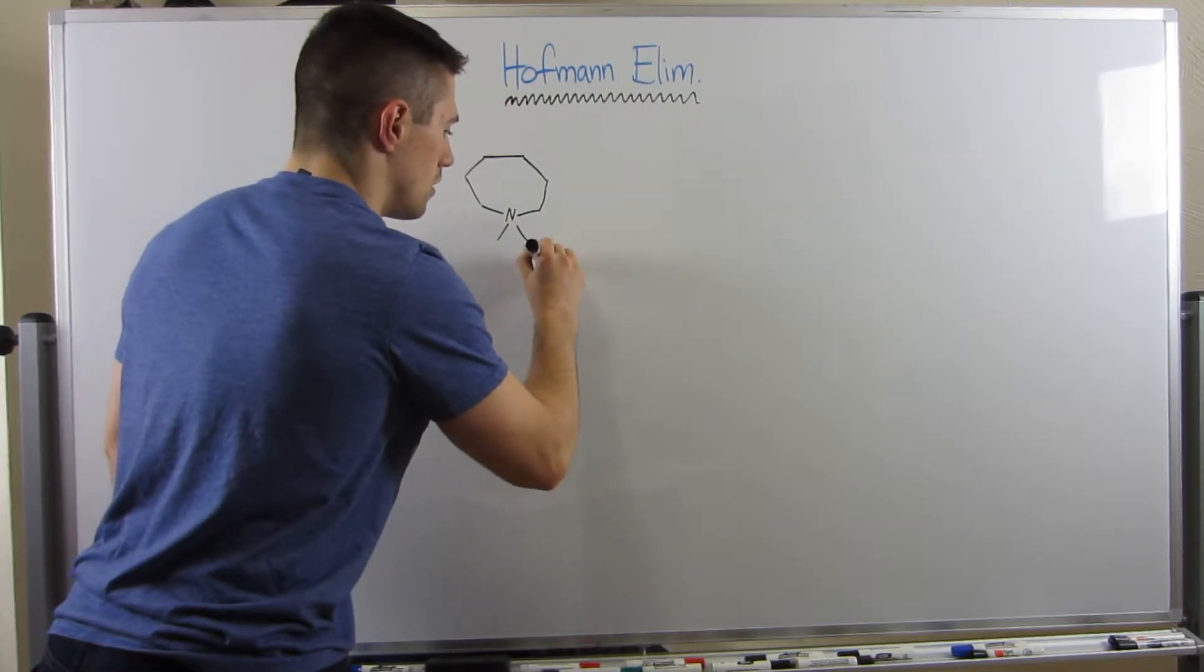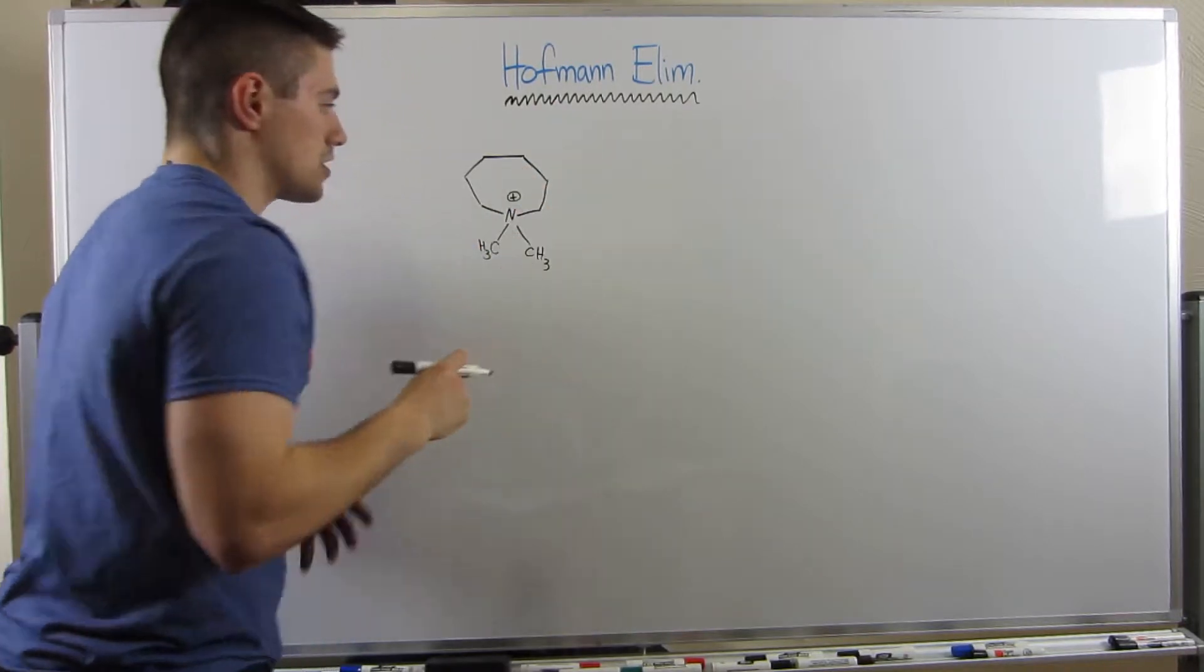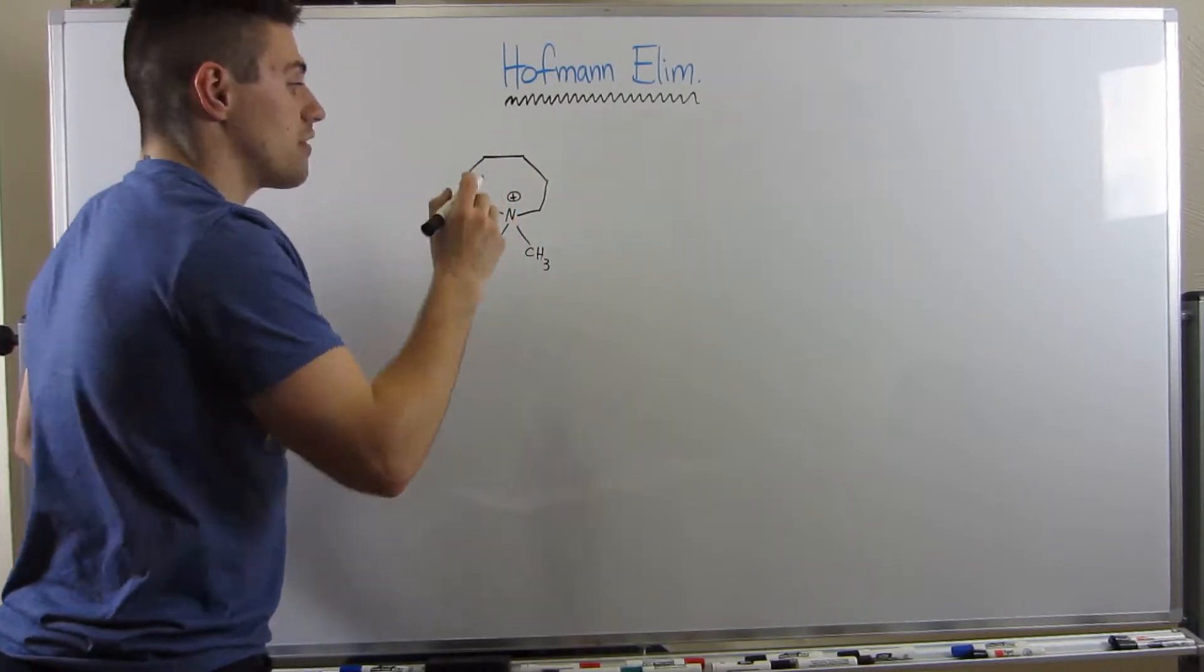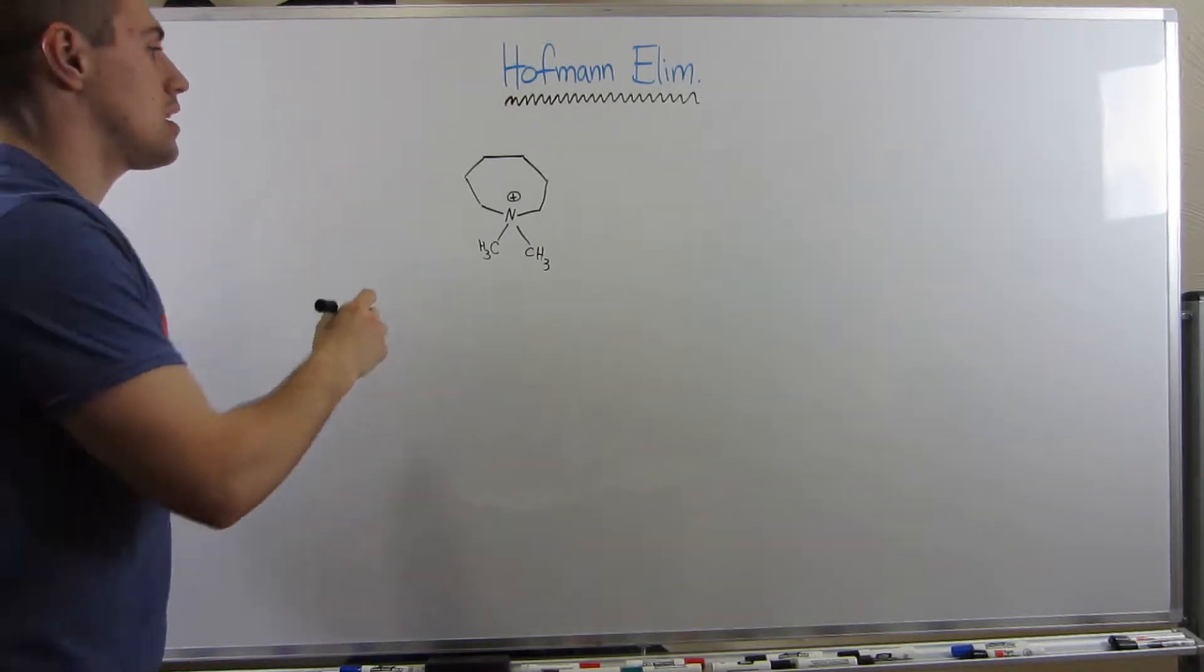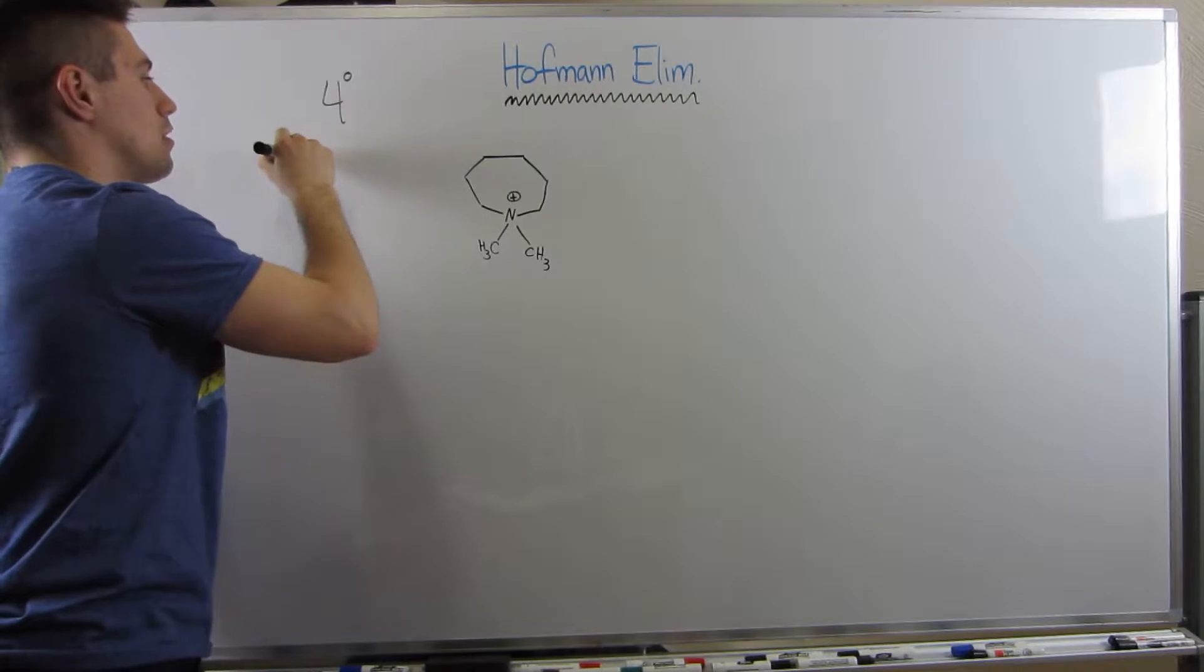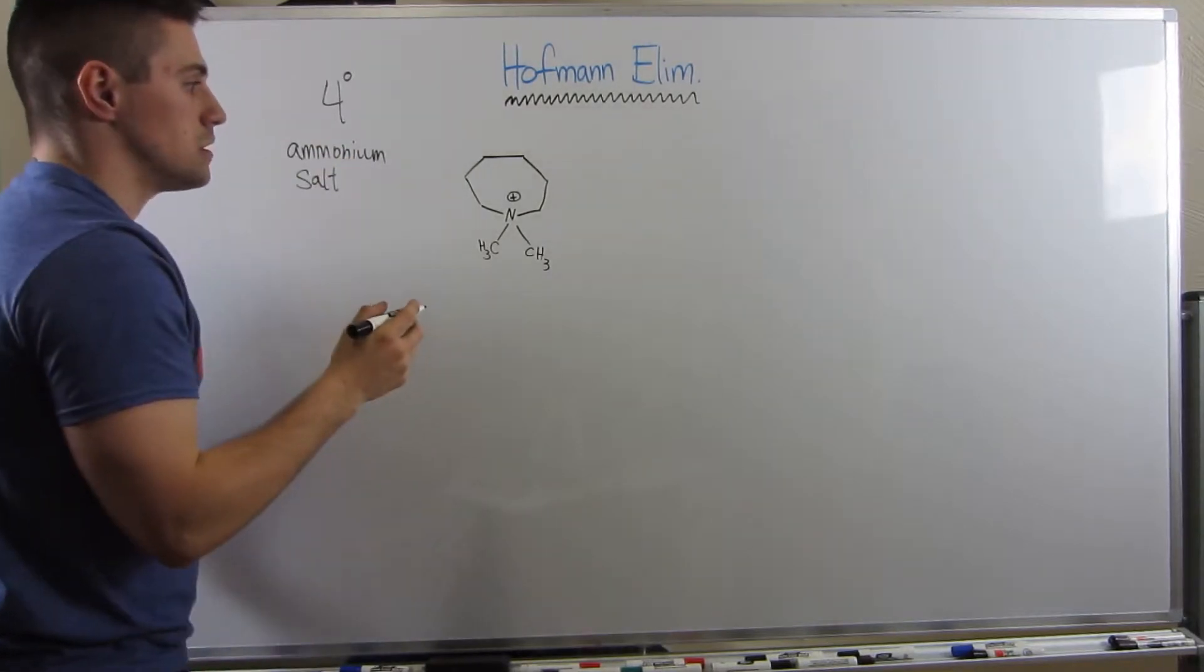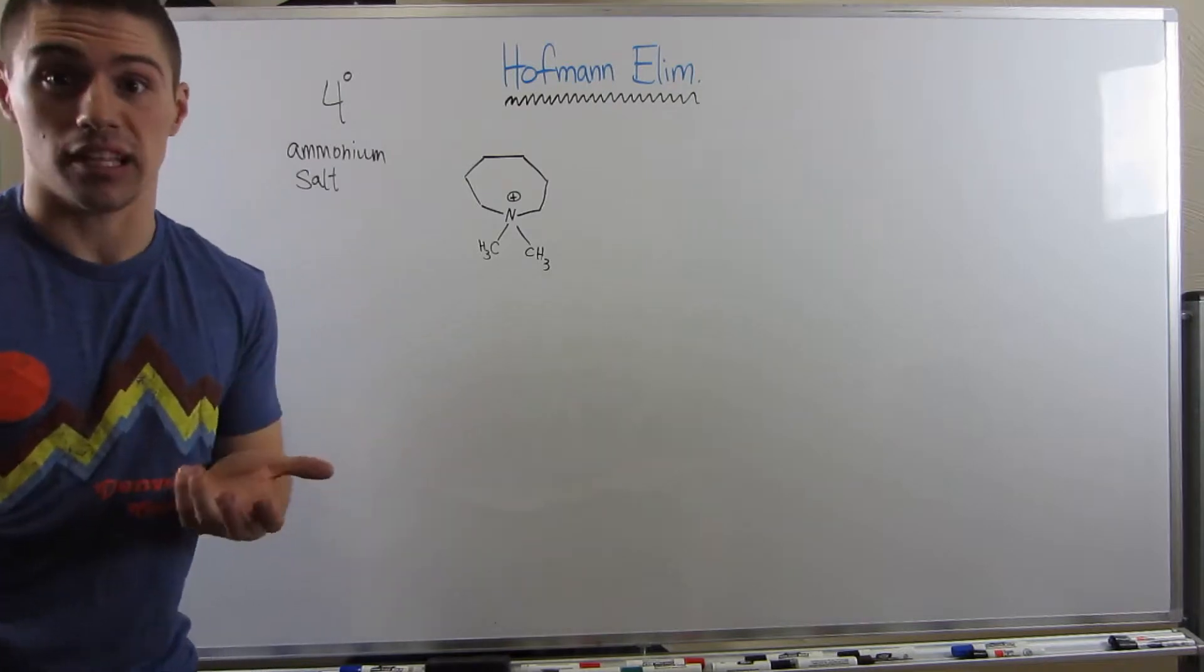Okay, so what I just drew for you guys is a cyclic amine, right? And this amine consists of one, two, three, four, five, six, seven elements. But not only is it a cyclic amine, it's a quaternary amine, and this would be part of an ammonium salt, right? Salt if we had some type of counter ion, like OH- or Br-, I-, something like that.